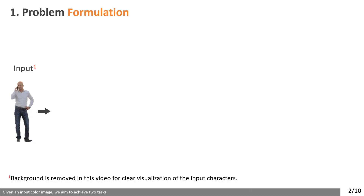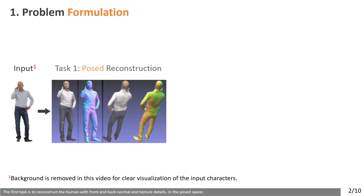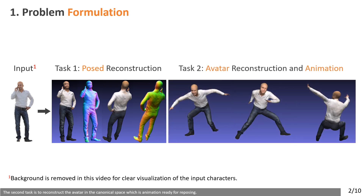Given an input color image, we aim to achieve two tasks. The first task is to reconstruct the human with front and back normal and textured details in the pose space. The second task is to reconstruct the avatar in the canonical space, which is animation-ready for reposing.